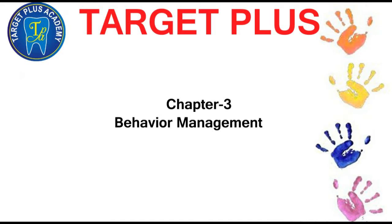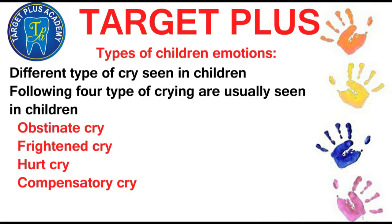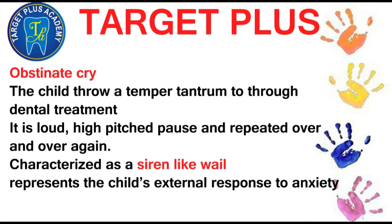Next we are going to discuss behavior management. Behavior is an observable act which can be described in similar ways by more than one person. Emotion is a state of mental excitement characterized by physiological behavior changes and alteration of feelings. Four types of crying are observed in children: obstinate, frightened cry, hurt cry, and compensatory cry. If you get an MCQ, a siren-like wail is seen in obstinate cry.